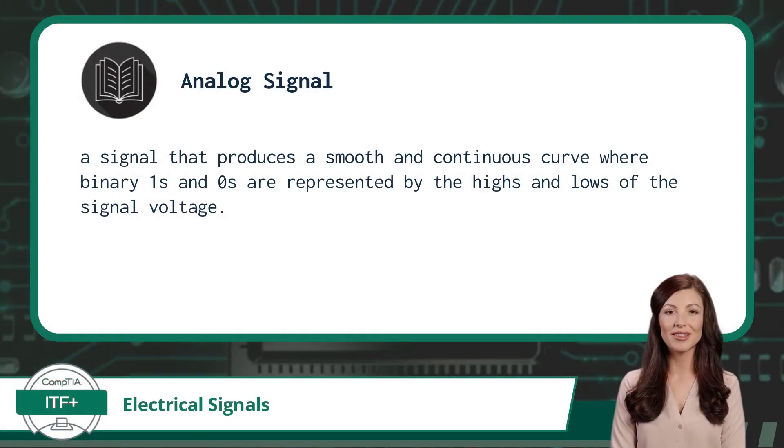An analog signal is a signal that produces a smooth and continuous curve. In this type of signal, the binary ones and zeros that we transmit are represented by the highs and lows of the signal voltage.